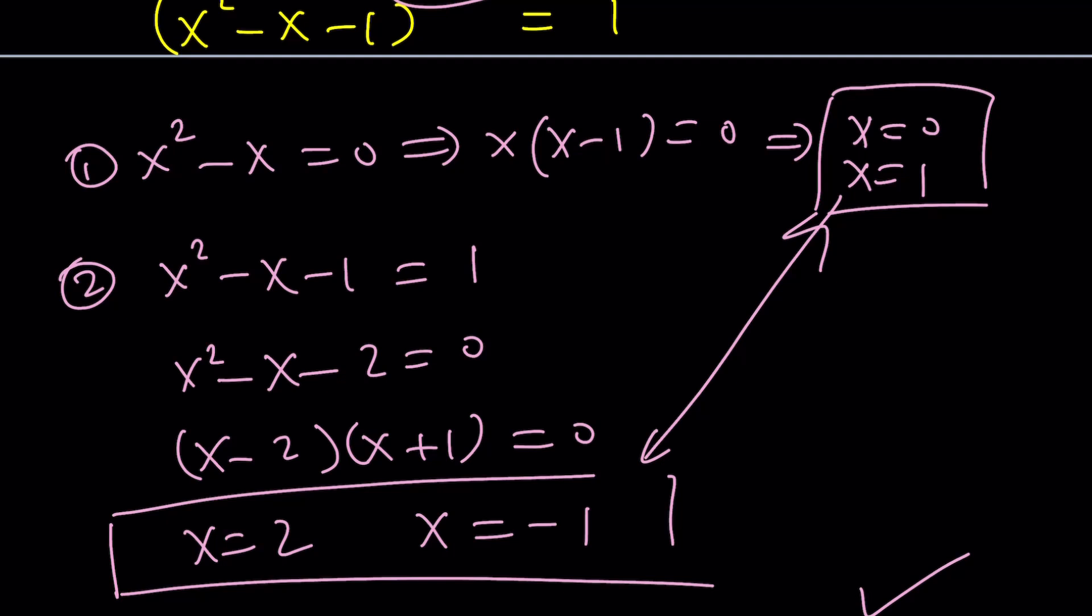So as a result, we can put these together. And it looks like we have negative 1, 0, 1, and 2 as the solutions. Now you can definitely go ahead and plug each of these in and check your work. Let's go ahead and do that.